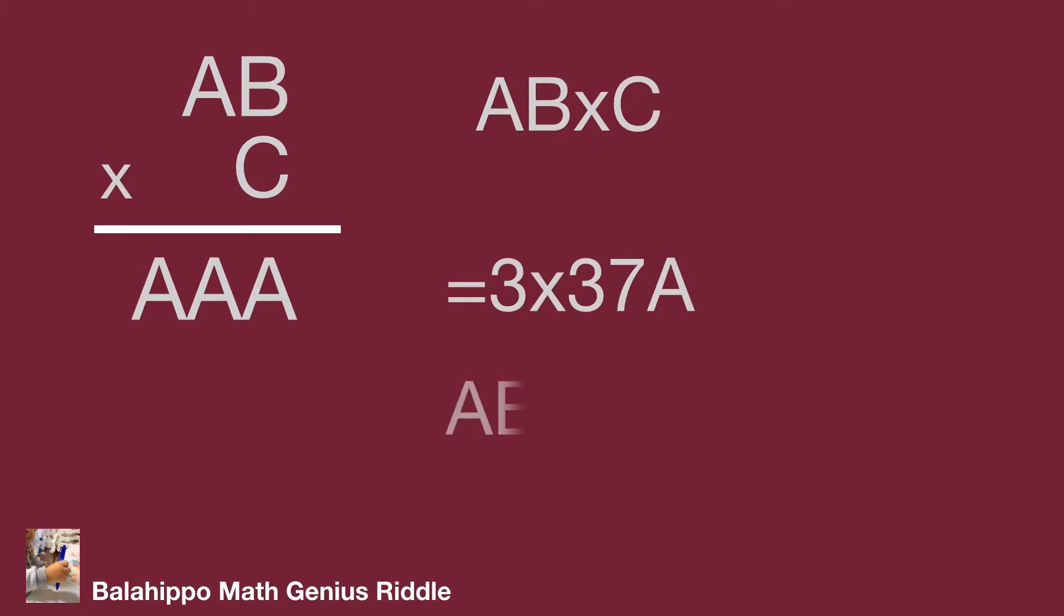AB could be equal to 37 or AB equal to 37 times 2 equal to 74. If AB equal to 37 times 3 becomes 111, it's 3 digits. So we have these two conditions to get the answer. Then the answer will become easy to find.